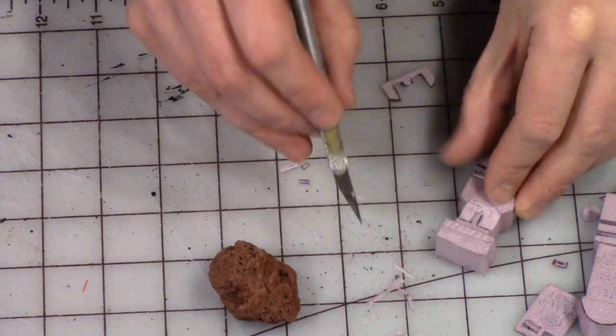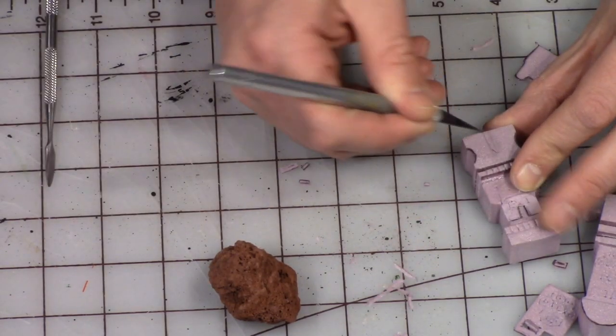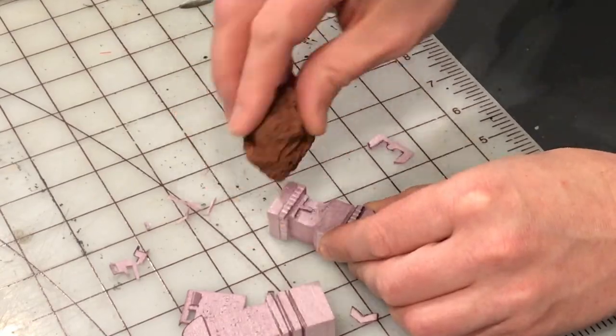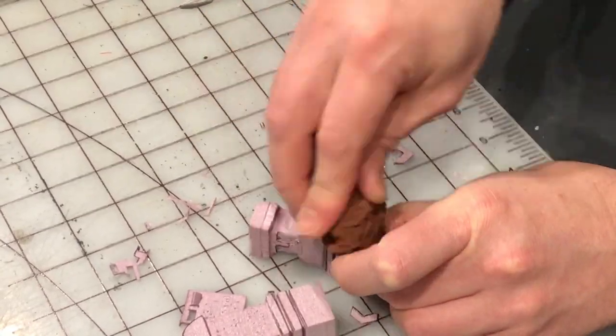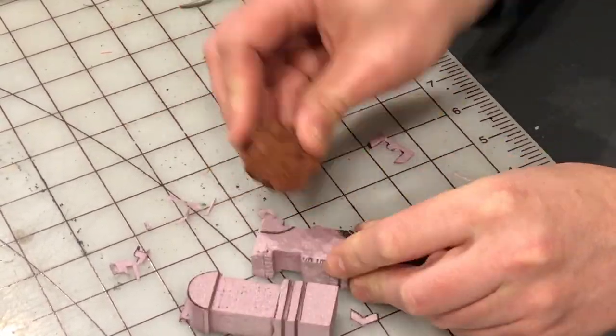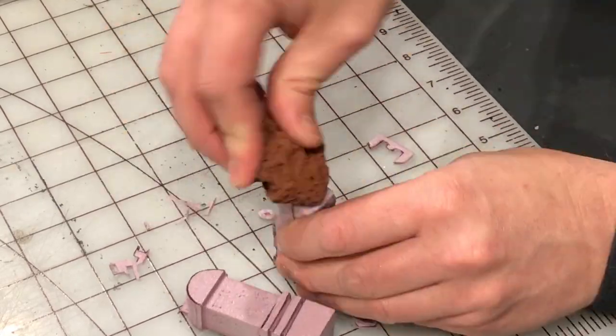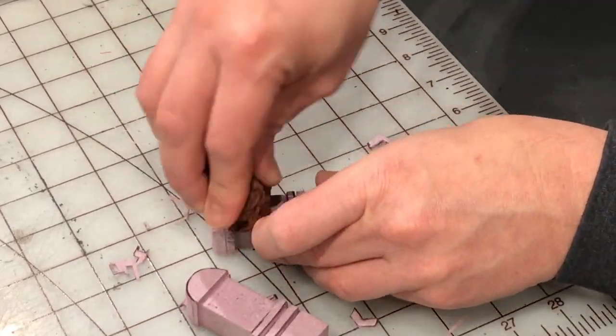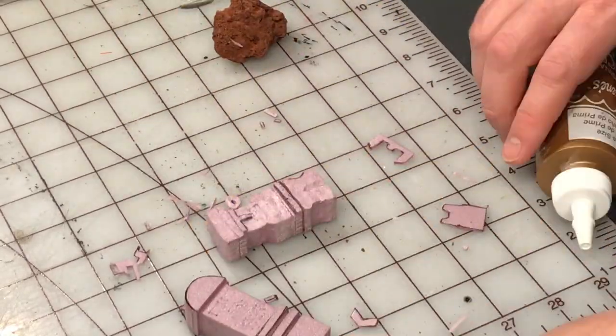Beveling some of the edges to make it a little bit more like rough stonework. I'm using a chunk of lava stone that you would use for a grill and texturing the pieces so that it has sort of a lava stone look to the styrofoam.